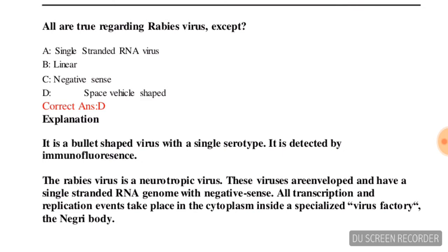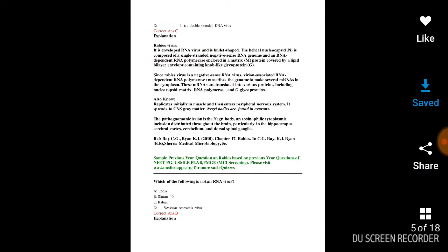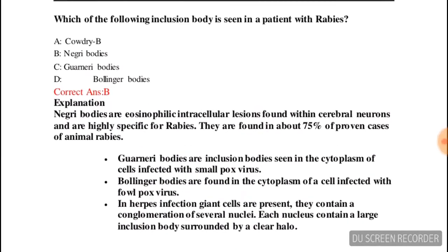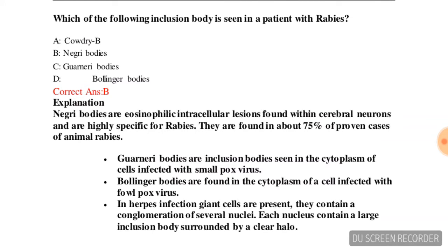Next question: which of the following inclusion bodies are seen in a patient with rabies? Options are: Cowdry bodies, Negri bodies, Guarnieri bodies, or Donovan bodies. The correct answer is option B — Negri bodies. A brief explanation about Negri bodies is provided on screen.